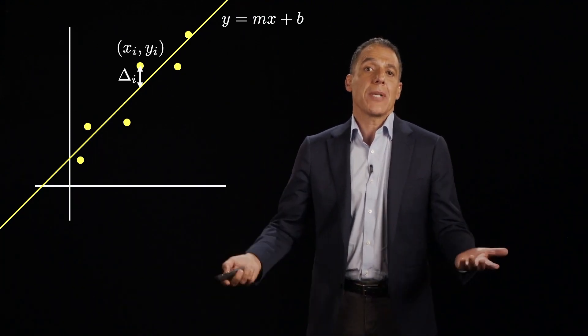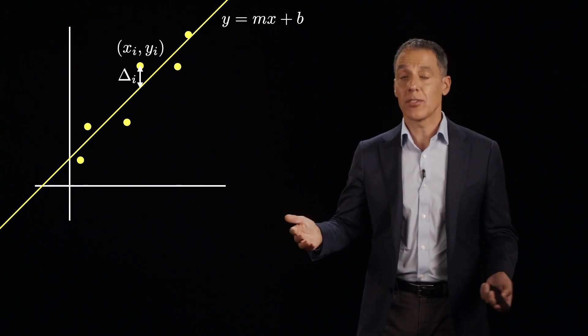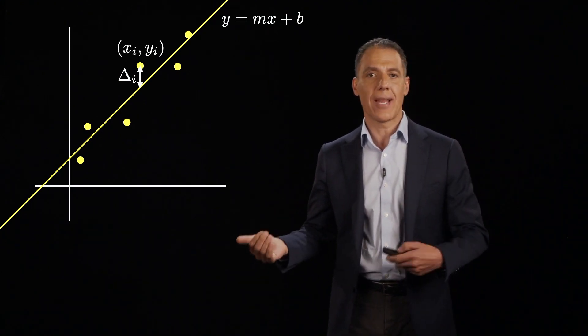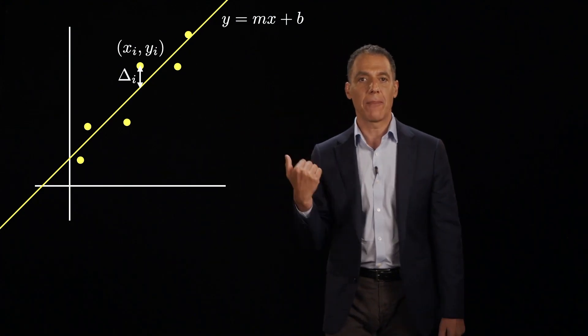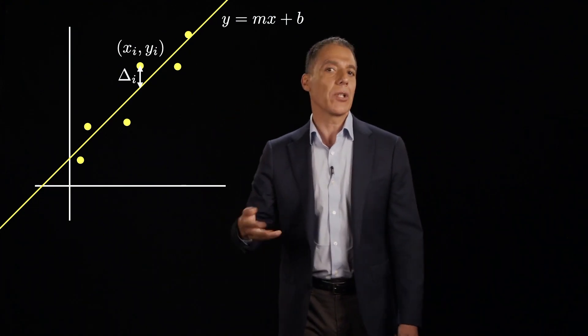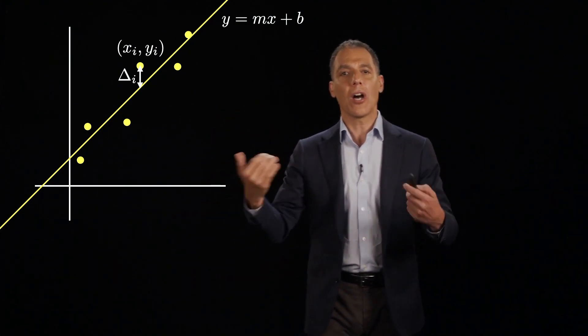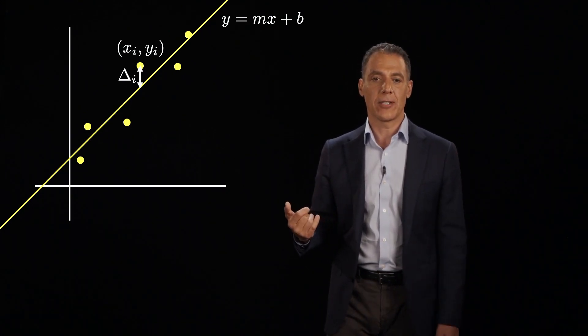So let's come up with an objective. Here's one. It's not the only one. It's not the right one. It's not the wrong one. But it is one that will lead to a very particular optimization technique. And then we will look at other objective functions, which will lead to other optimization techniques.